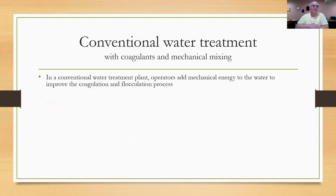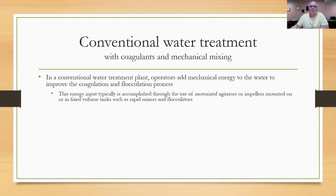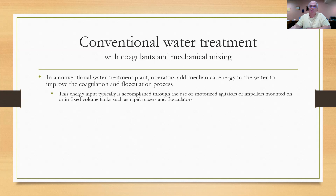In conventional water treatment with coagulants and mechanical mixing, operators typically add mechanical energy to the water to improve coagulation and flocculation processes. This energy input is typically accomplished through the use of motorized agitators or impellers. The tank they're mixing in is a fixed tank with a fixed volume — water flows through it, and we put energy input into the rapid mixers and flocculators by the use of these motorized impellers. The energy input, or G-value, is relatively violent and short in rapid mixing.